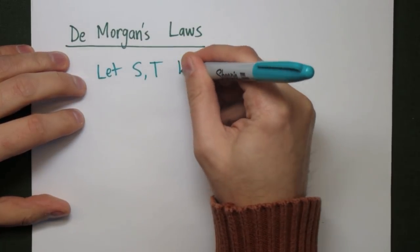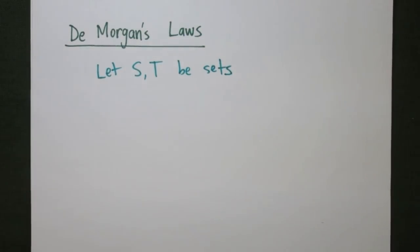De Morgan's laws give us a way of finding the complements of both the union and the intersection of two sets.